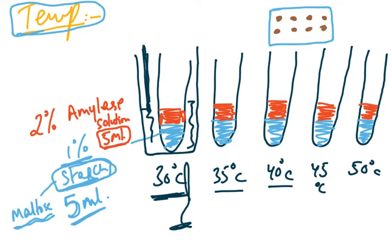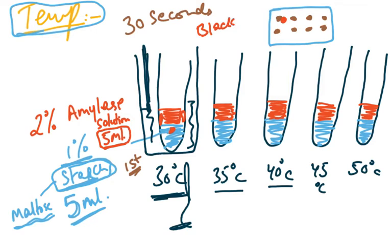After mixing the amylase and starch, we take a drop every 30 seconds and mix it with the iodine on the white tile. If the colour turns black, it means starch is still present. We repeat this every 30 seconds — taking a drop from the amylase-starch mixture and mixing it with iodine — and if it gives a black colour, starch is still present.